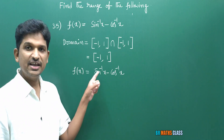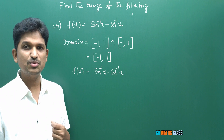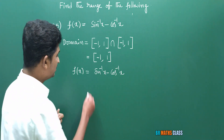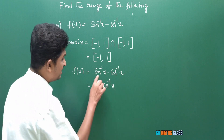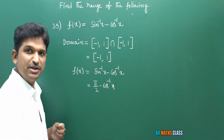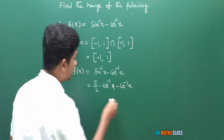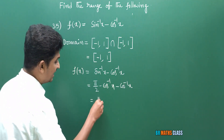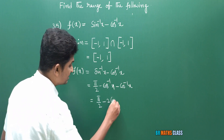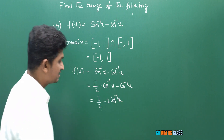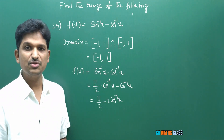Now I need to calculate the range of sin⁻¹x − cos⁻¹x. Since sin⁻¹x + cos⁻¹x = π/2, I can write sin⁻¹x = π/2 − cos⁻¹x. Substituting: f(x) = (π/2 − cos⁻¹x) − cos⁻¹x = π/2 − 2cos⁻¹x. So f(x) = π/2 − 2cos⁻¹x.